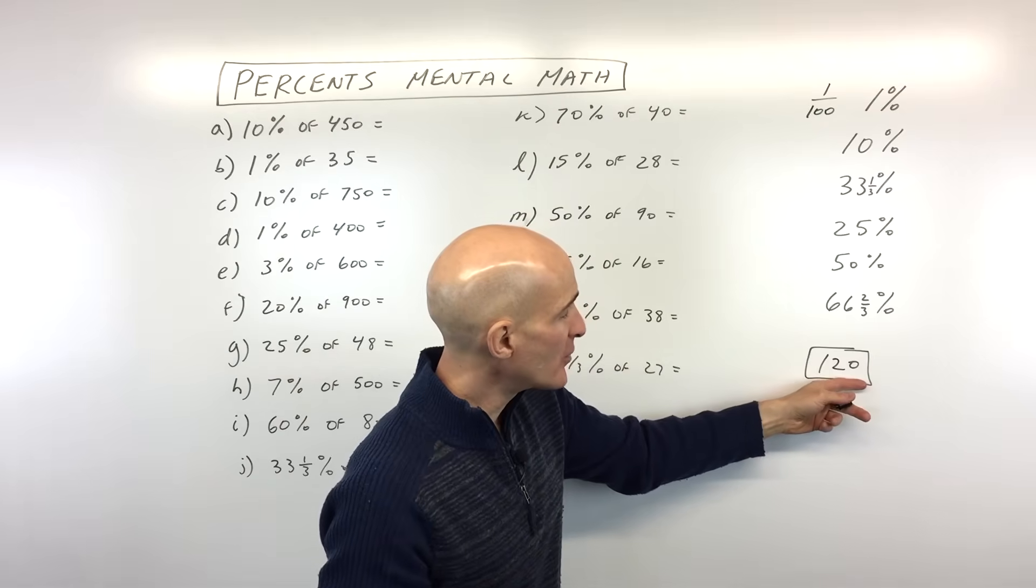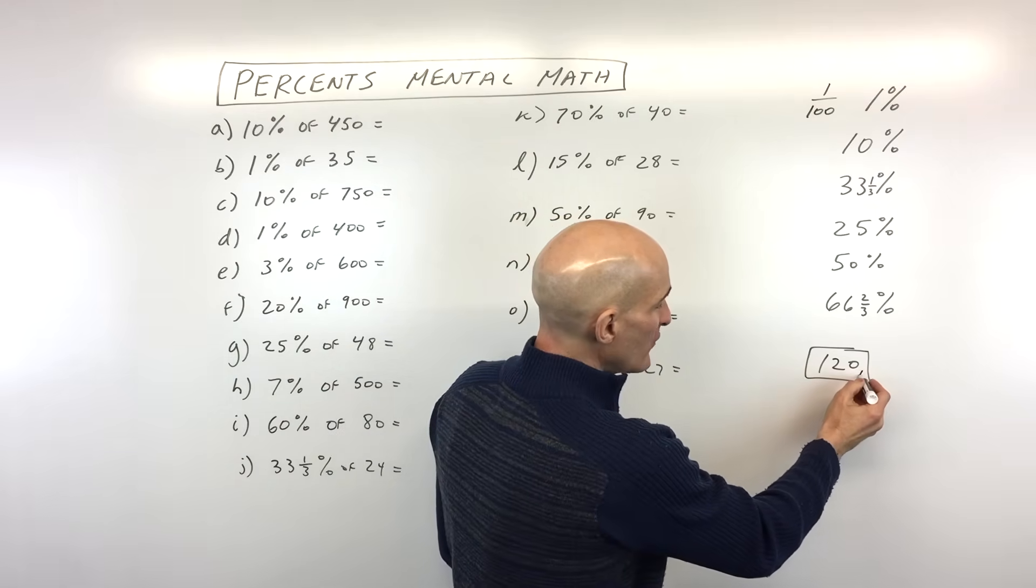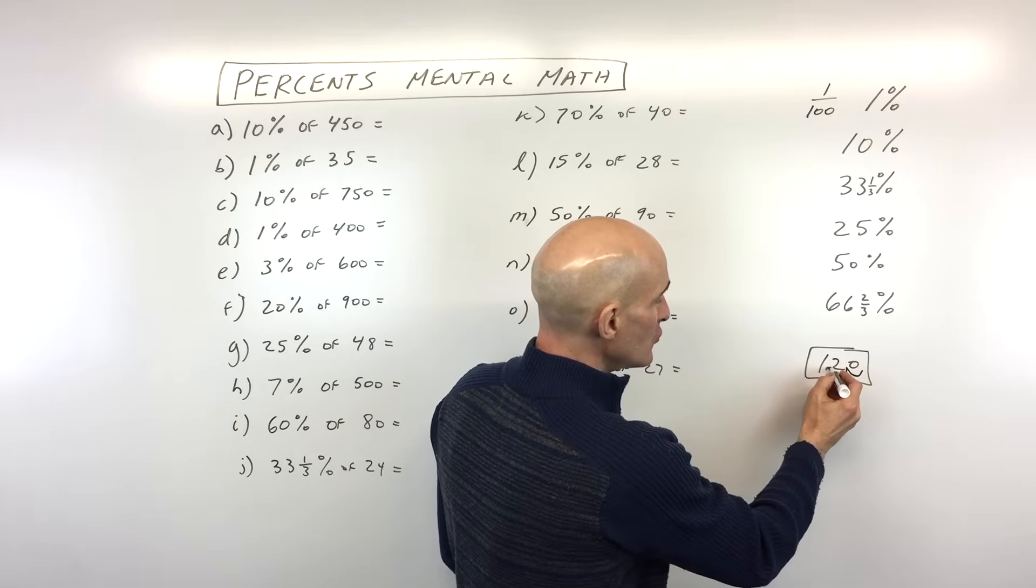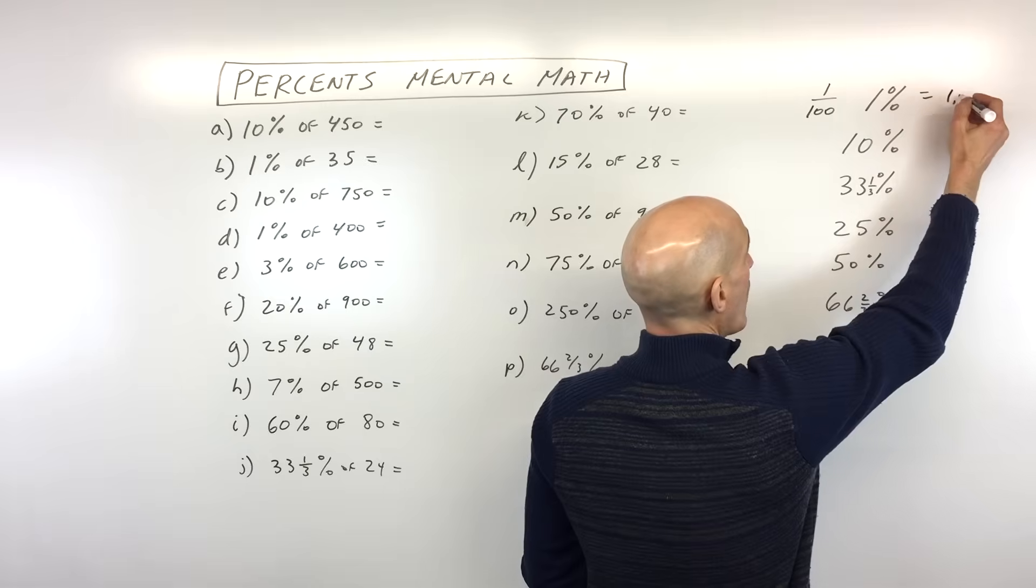So for example, if we have 120, let's just use this as an example. One percent of 120, we would move that decimal one, two places. So now if we're talking about one percent, we'd be at 1.2.